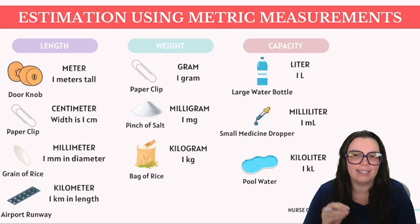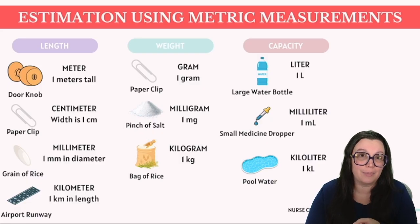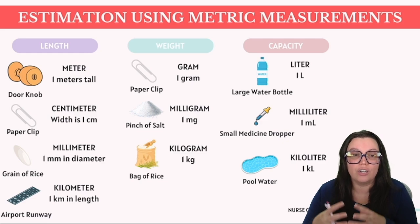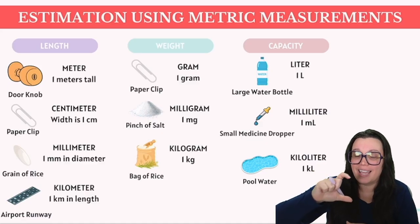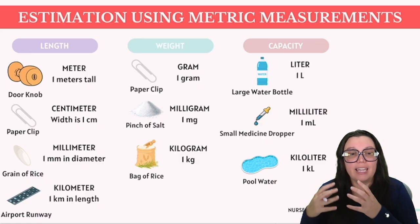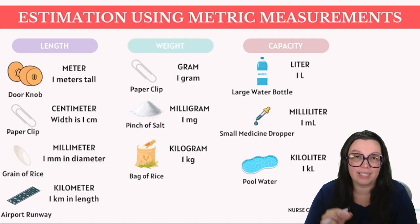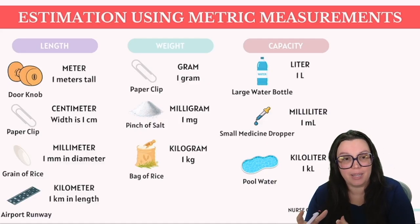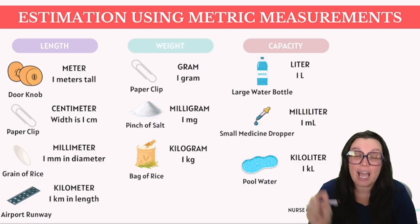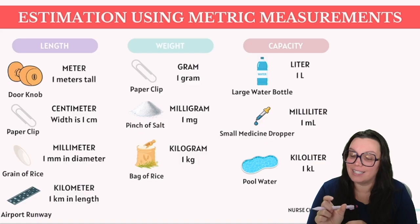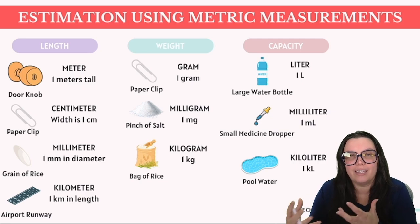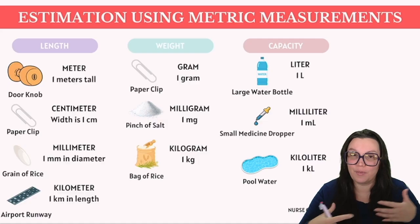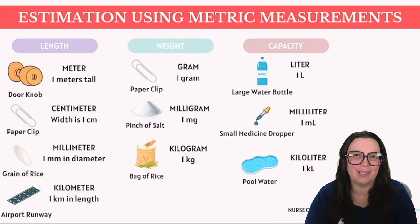When it comes to length, there are a few things you need to know: meter, centimeter, millimeter, and kilometer. One meter is about the height of a doorknob. One centimeter is approximately the width of a paper clip. One millimeter is approximately the diameter of a grain of salt — really, really tiny. And one kilometer is approximately equal to an airport runway, so if you've ever been on an airplane, you know that runway is very long.